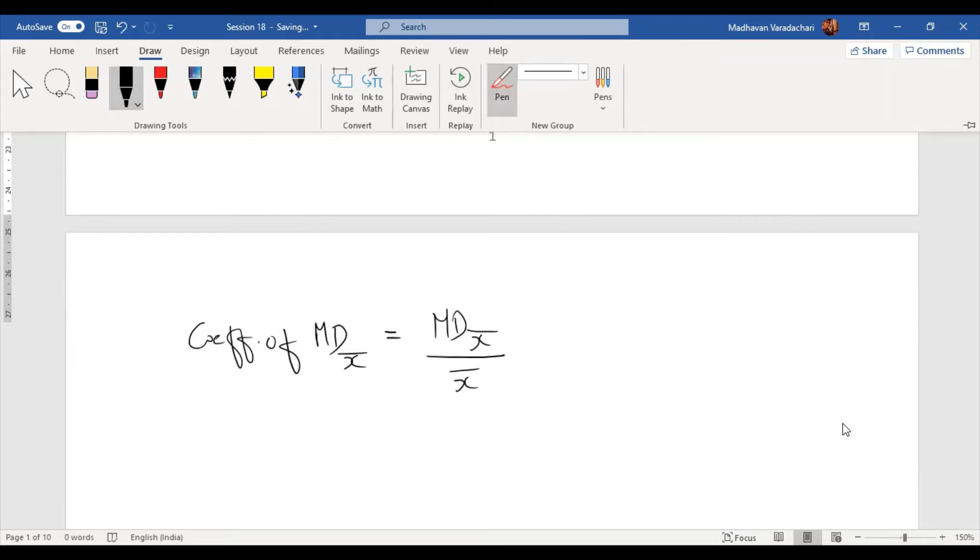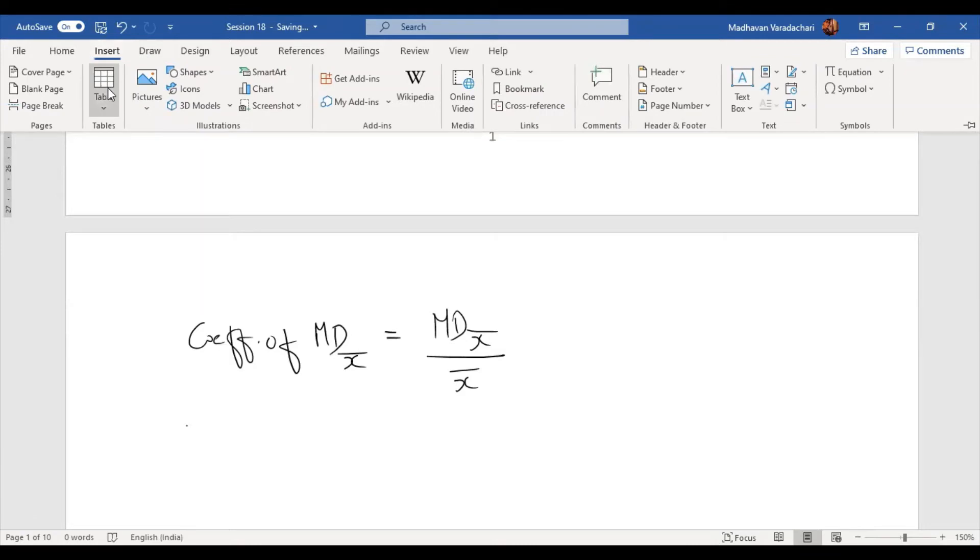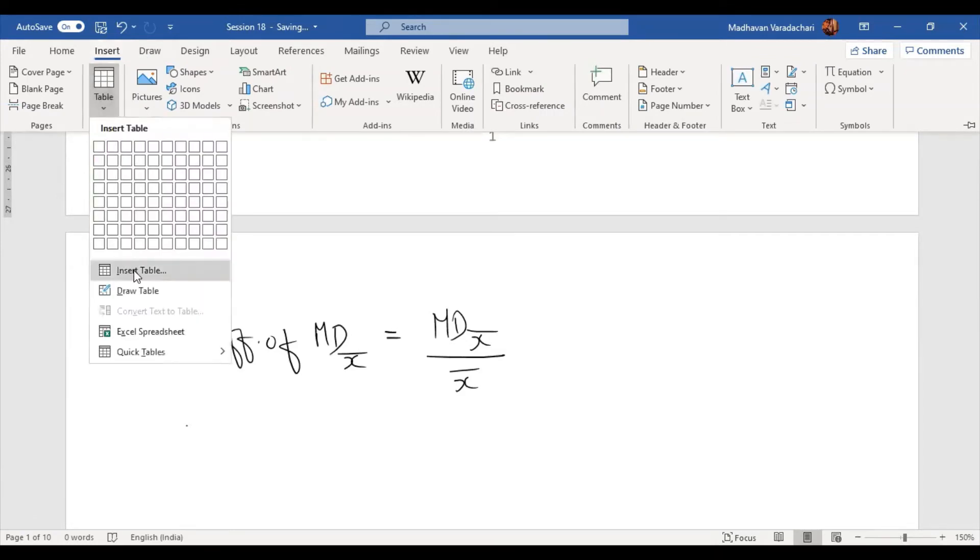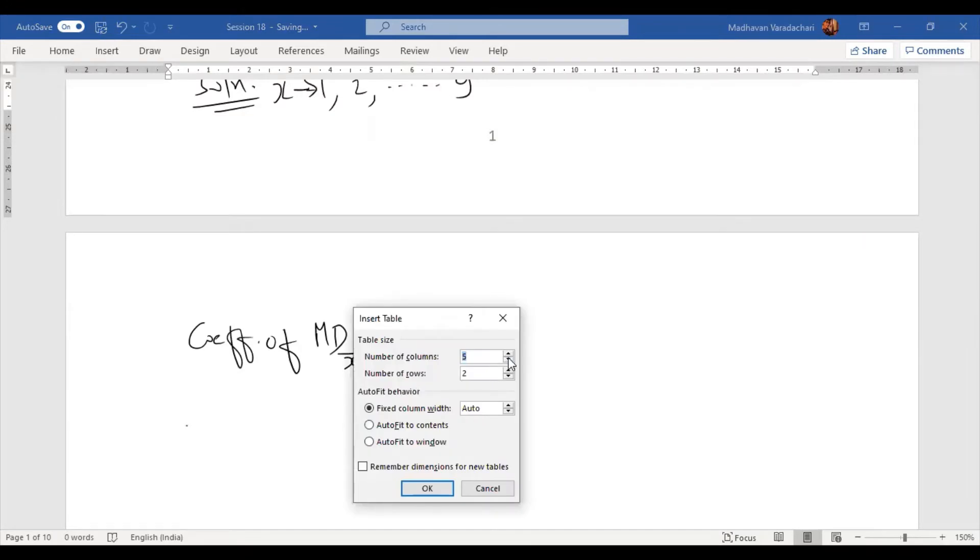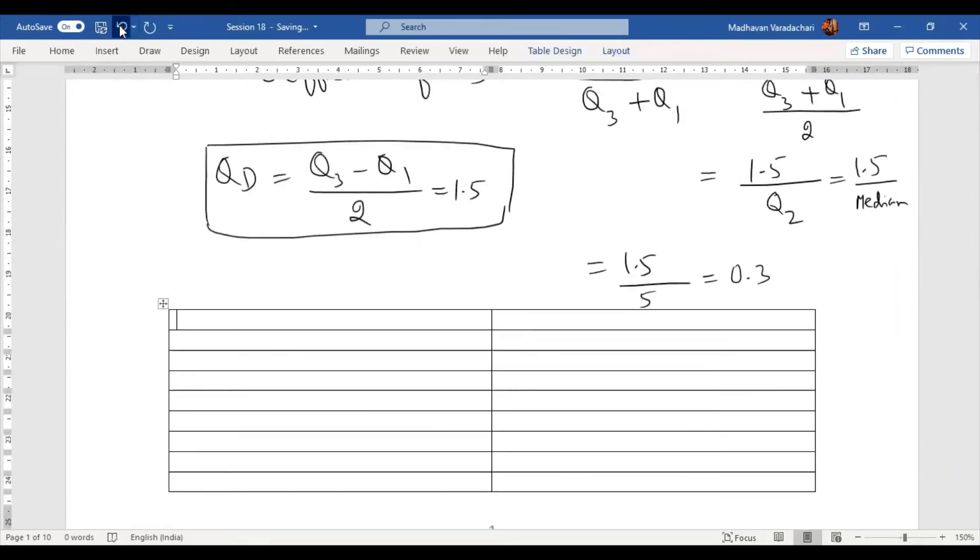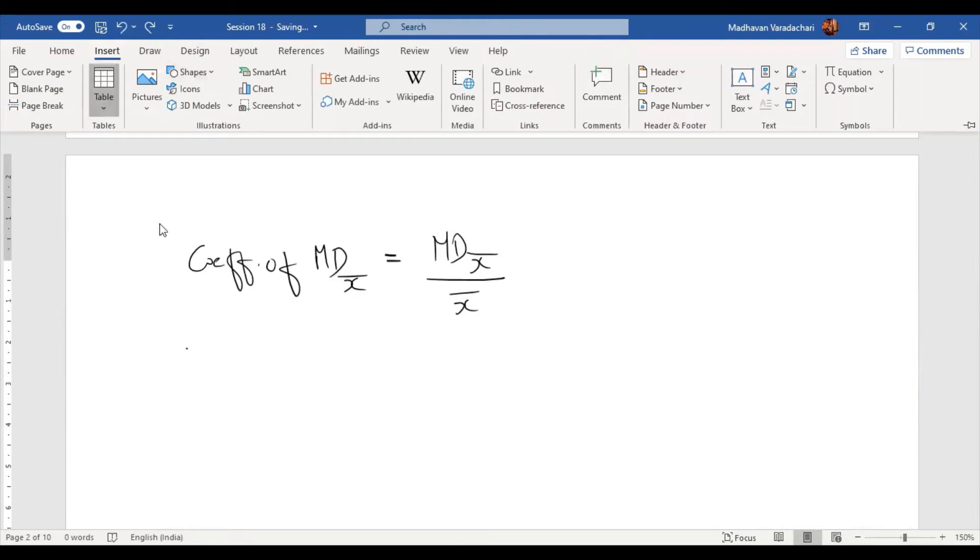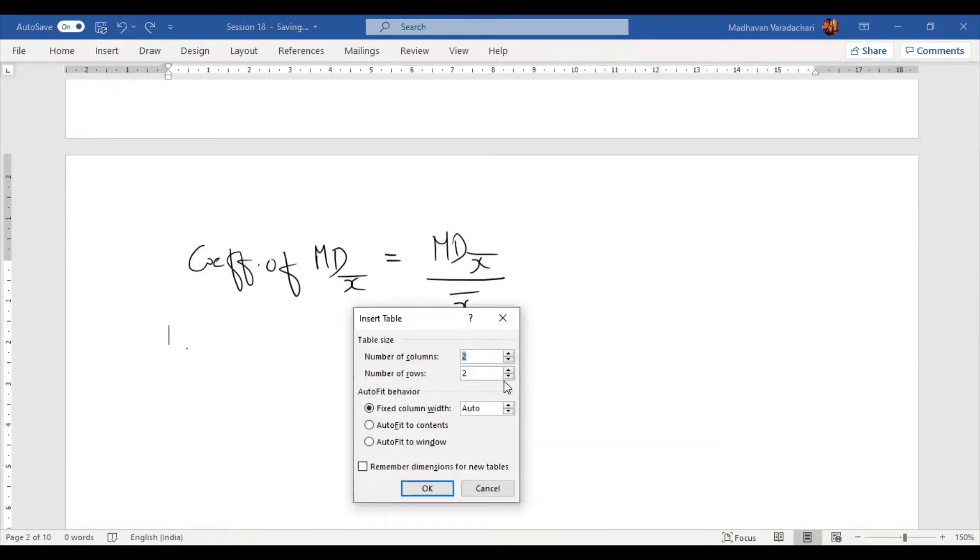Now, first of all, we have to find out what is mean, and then we have to find out what is mean deviation about mean. Then we have to find out coefficient of mean deviation about mean. So for that, first let us create a table having two columns and 11 rows.